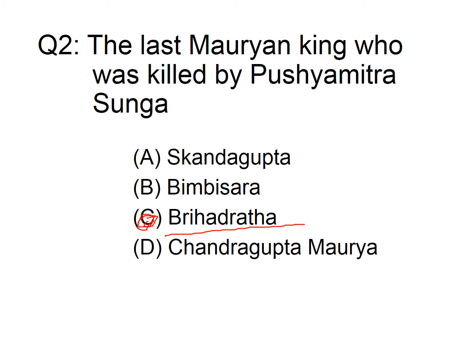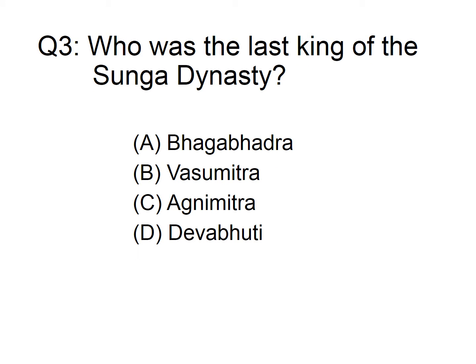Pushyamitra Sunga killed the last Mauryan king, Brihaddatha, and established the Sunga dynasty. Who was the last king of the Sunga dynasty? Option A: Bhagavaddhra, B: Vasumitra, C: Agnimetra, D: Devabhuti. The correct answer is option D, Devabhuti.